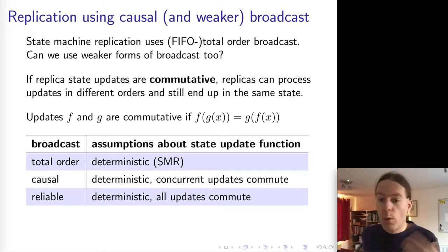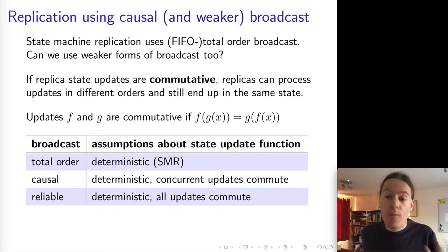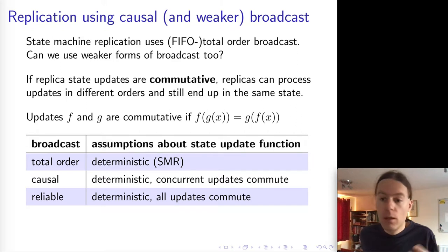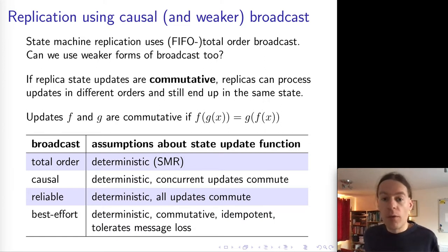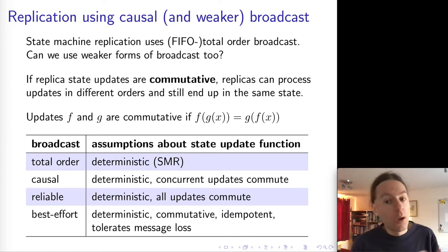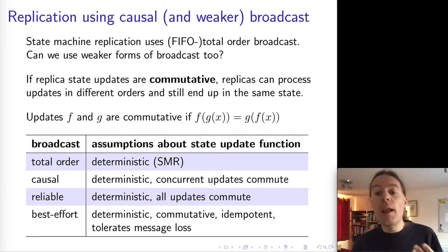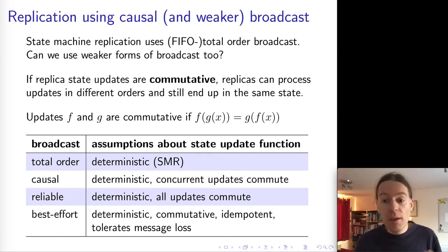We can generalize further. With reliable broadcast, there are no ordering guarantees at all — just the guarantee that every message is delivered exactly once. In this case, all updates must commute because the broadcast protocol provides no ordering guarantees. We could go even weaker with best-effort broadcast, where a message might be lost or delivered multiple times. In that case, the state update function must tolerate message loss and handle messages being delivered multiple times through idempotence. All these different models of broadcast can be used to build replication systems.